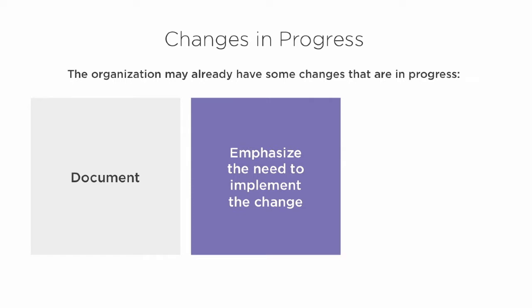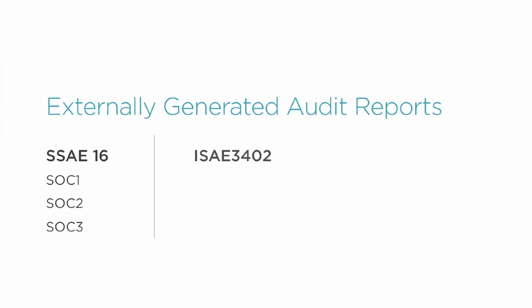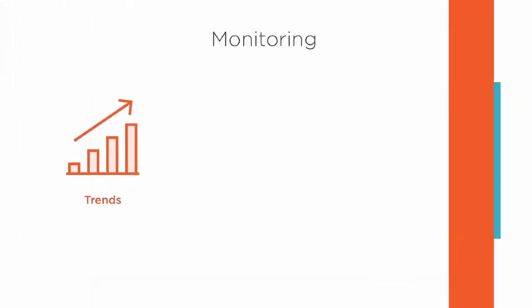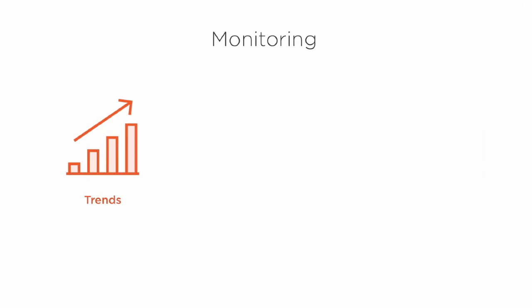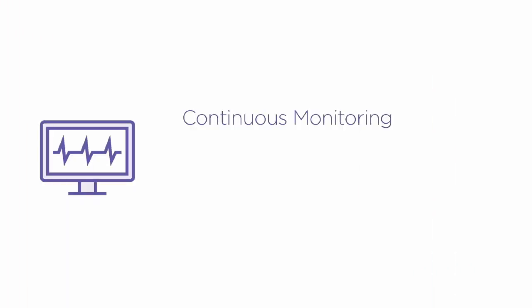Information technology is a critical component of business operations today. Nearly every part of the business relies on technology and networks in order to operate. Through the examination of IT projects, systems, processes, and management, the auditor can assure management on the value and benefits of information technology and the effectiveness of the risk management program.